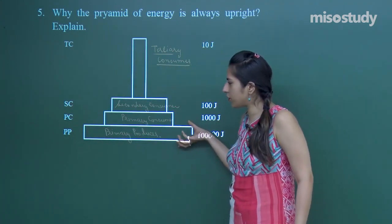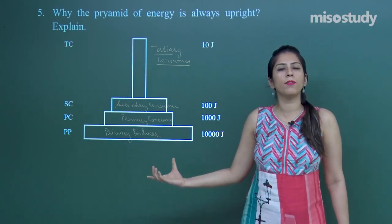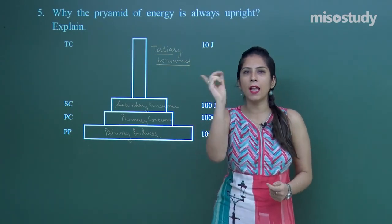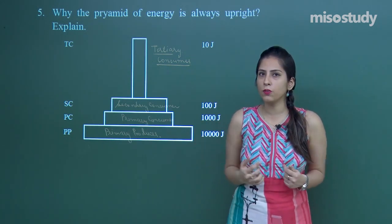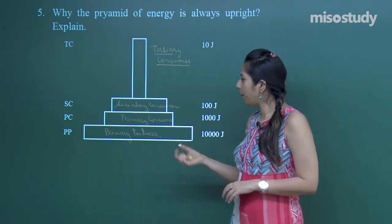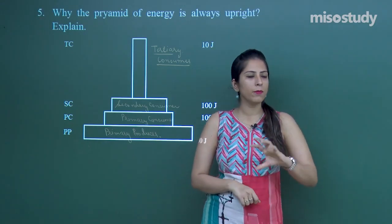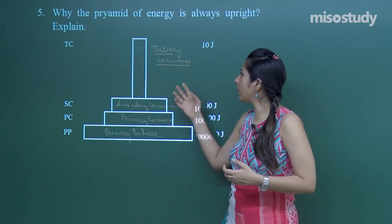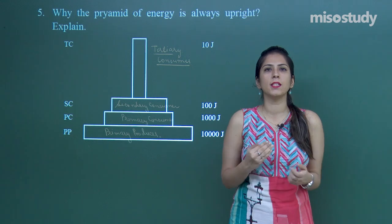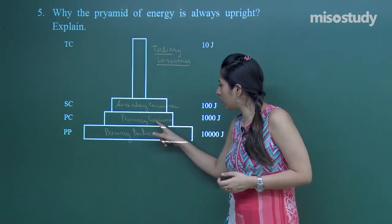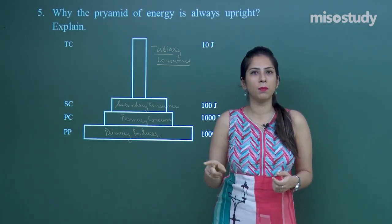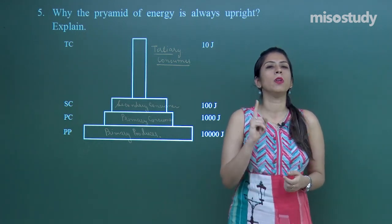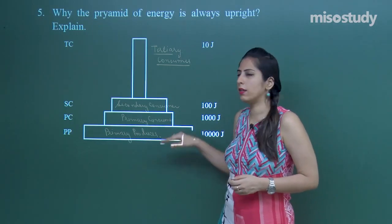In a forest ecosystem, green plants are primary producers — they fix light energy and convert it to chemical energy stored as organic substances. Herbivores are primary consumers, carnivores are secondary consumers, and top carnivores like lions and tigers are tertiary consumers. When consumers feed, according to Lindemann's law, only 10 percent of energy is transferred from one trophic level to the next as we move upward.